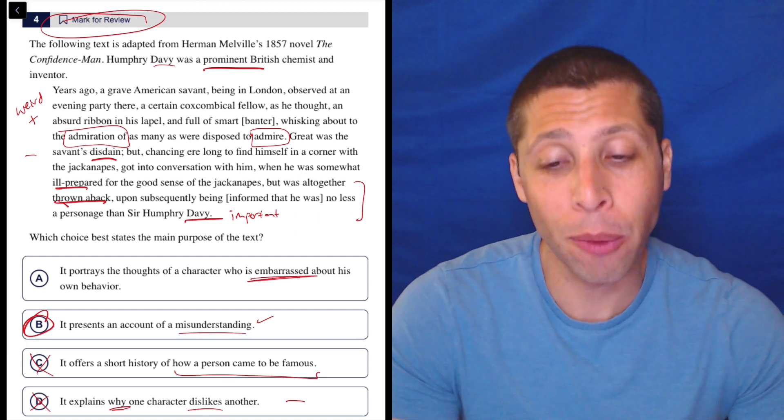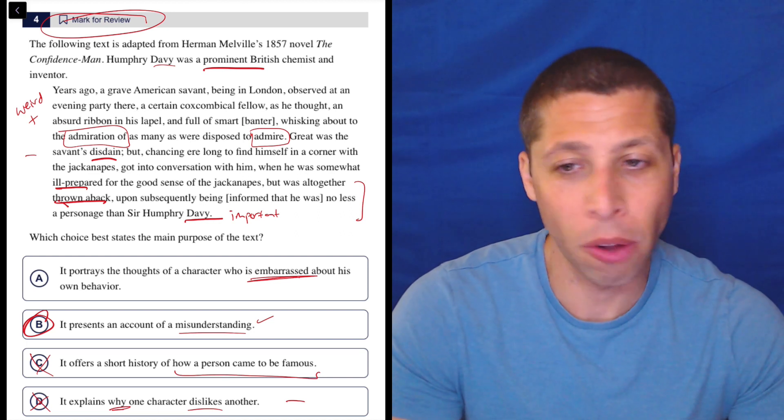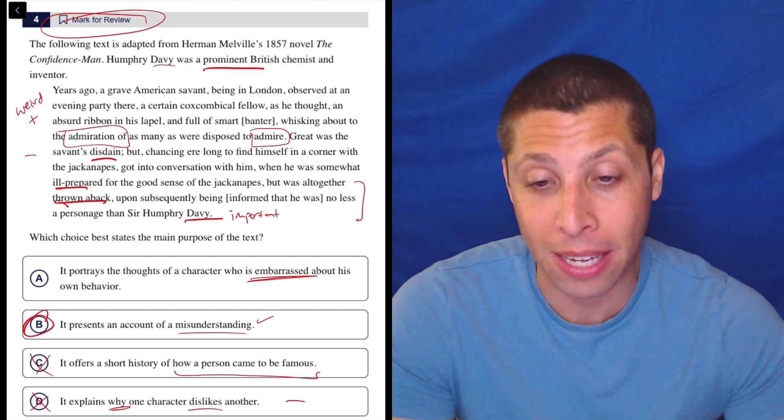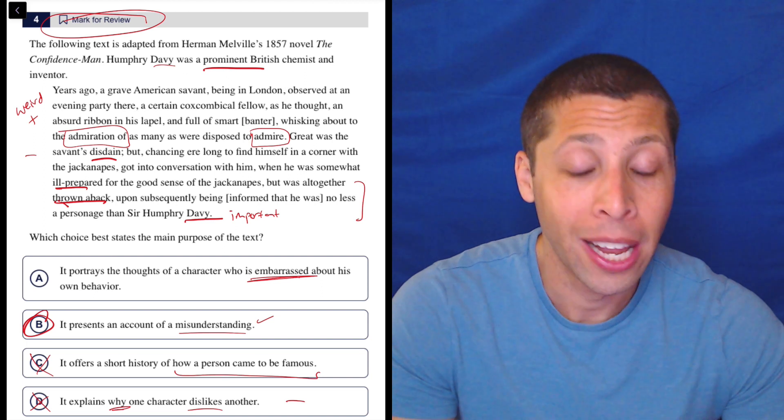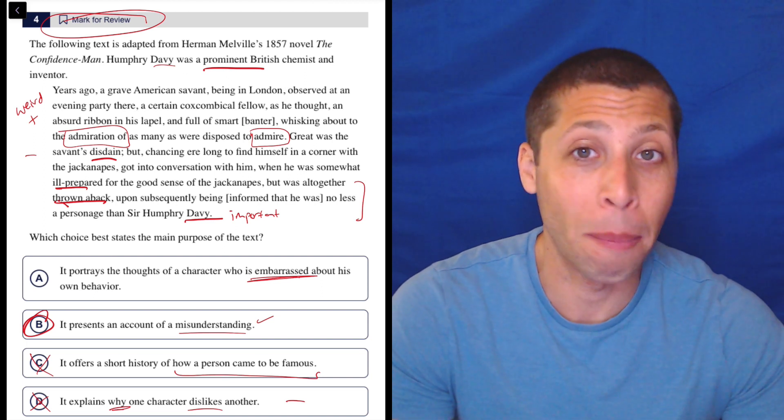But if you got this question wrong, I wouldn't worry about it. This is just really, really tricky and really, really weird. I'm not even going to go through all the different words in here. I've never heard of coxcombical before. I have no idea what that means. So there's a lot of words that I would have no clue either. And so if you want to look them up, go for it. But I don't think coxcombical is going to come up in the SAT.